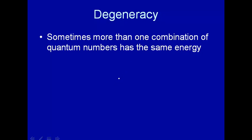So if you have two states that are different because they have different quantum numbers, but they have the same energy, those two states would be degenerate. Now, you might think a degenerate wave function might hang out at night on street corners and do drugs and generally act as a character in Grand Theft Auto V. But in fact, that's not the use of degeneracy here. Degeneracy means same energy, different combination of quantum numbers.